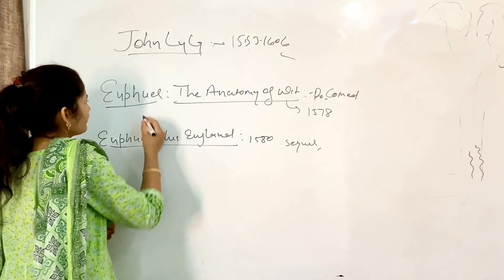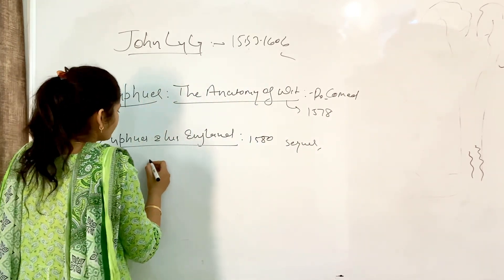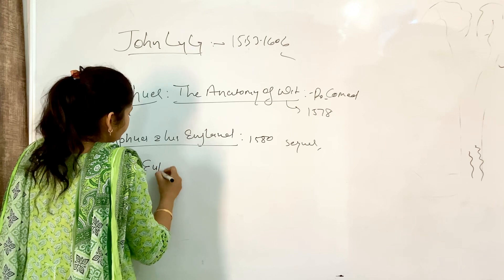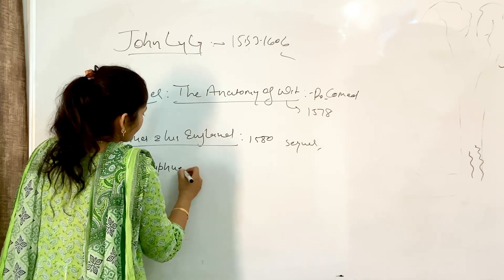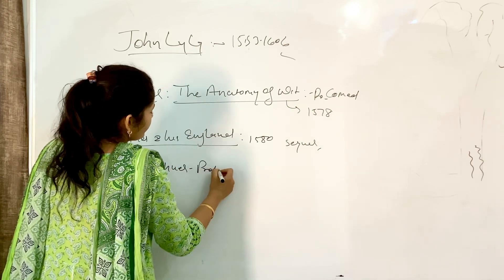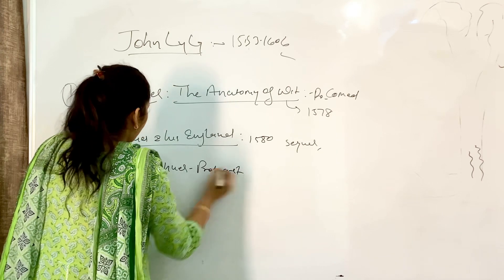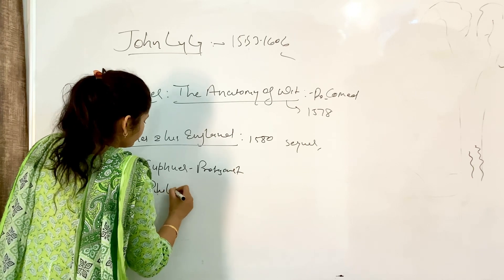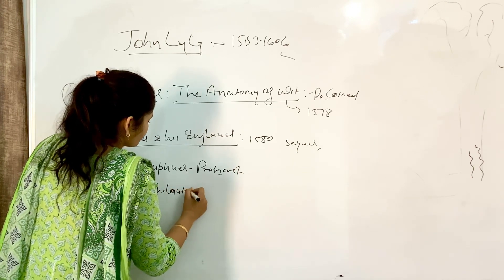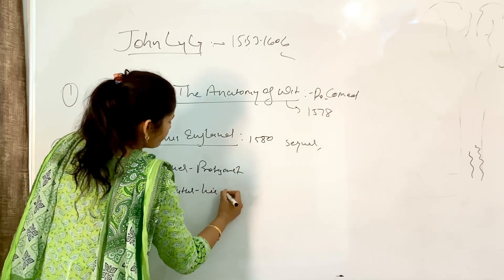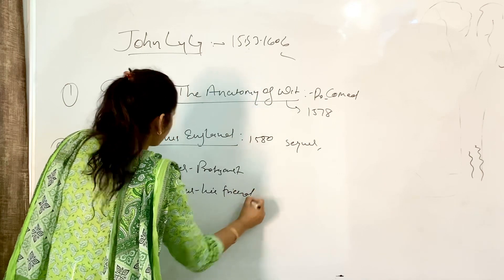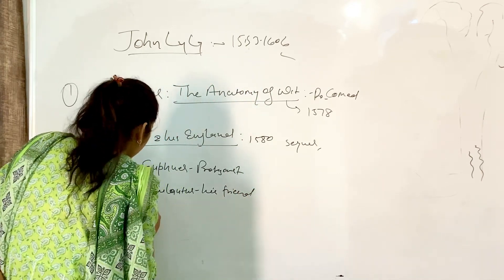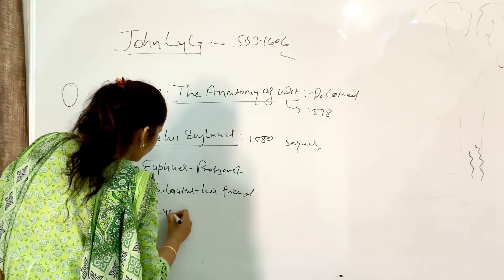So what is the story? Euphues is the main character, the protagonist. His friend is Philotus, and his beloved is Lucila. They both love that girl, Lucila.